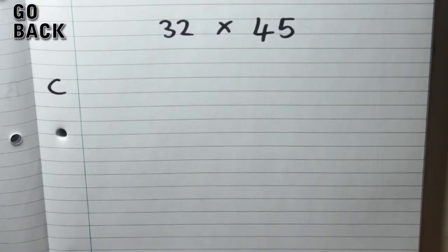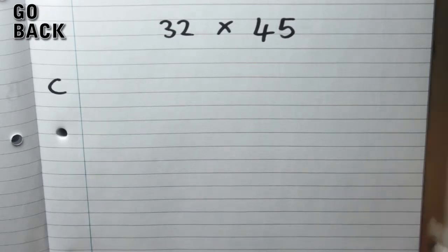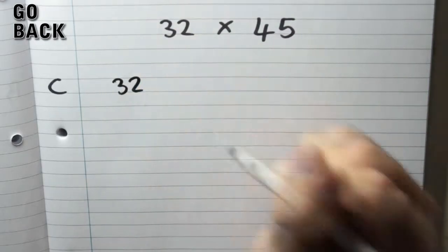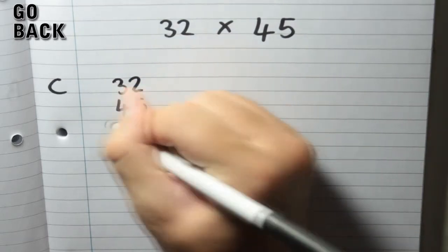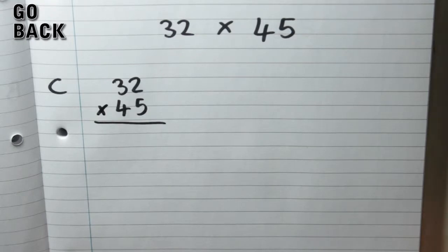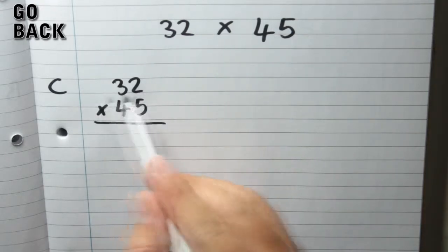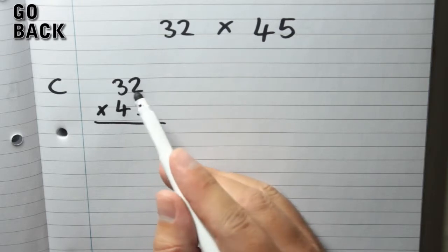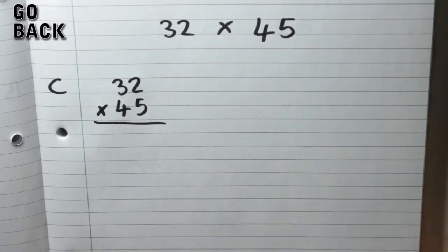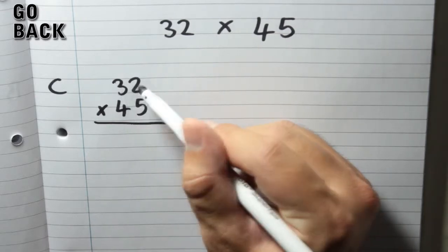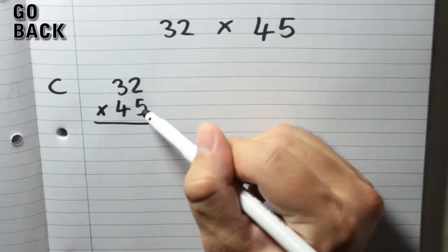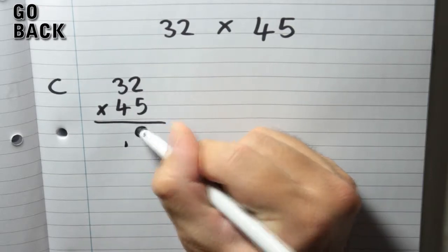Part C: 32 times 45. Now this is our first long multiplication question, which can be done in two ways. I'm going to first do the column method. So 32 there, 45 there — it doesn't really matter which one goes on top. Usually I'll put the one with the most digits on top. Start by multiplying these two digits here by the 5. So 2 times 5 gives 10, so I carry the 1 and the 0.